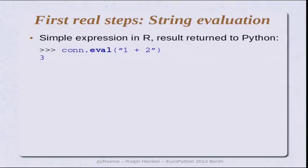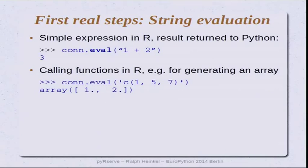Now we come to the first real steps — what can you do with a connection to R-Serve? The connector provides a method called eval that lets you send arbitrary R expressions to the R side, have R evaluate that string expression, and receive the result back as a native Python object. For example, you can sum two numbers, or call the C operator in R to create a numeric array — and since eval returns the result, what you get back is that array, converted to a NumPy array on the Python side.